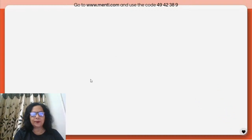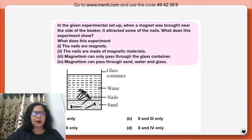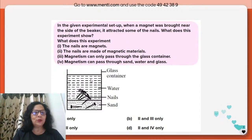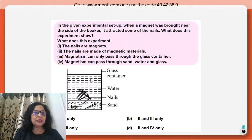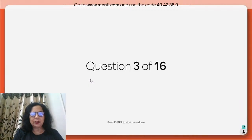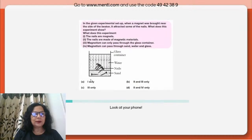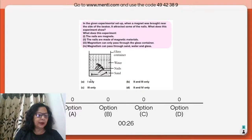Next question from magnetism: in the given experiment setup, there is a glass container with sand, nails, and water. When a magnet was brought near the side of the beaker, it attracted some nails. What does this show? Options: nails are magnets; nails are made of magnetic material; magnetism can pass through glass; or magnetism can pass through sand, water, and glass.